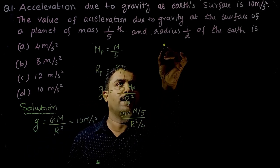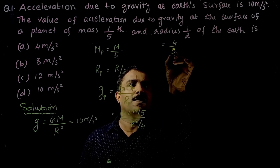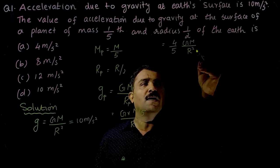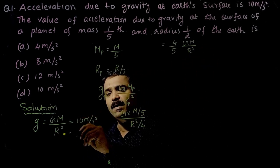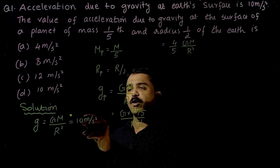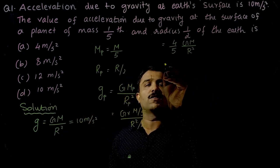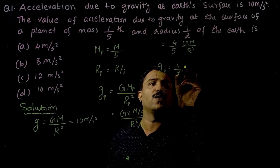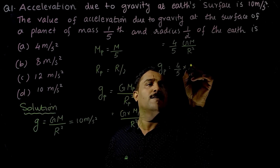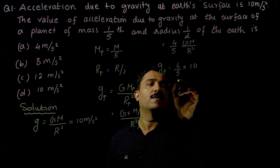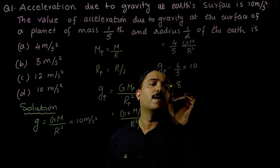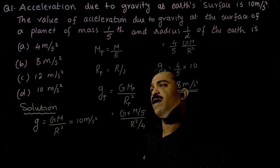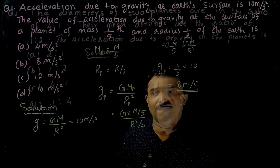That gives us (4/5)·(GM/R²). Since GM/R² = 10 m/s², substituting gives gp = (4/5)×10 = 8 m/s². So option B is the correct answer.